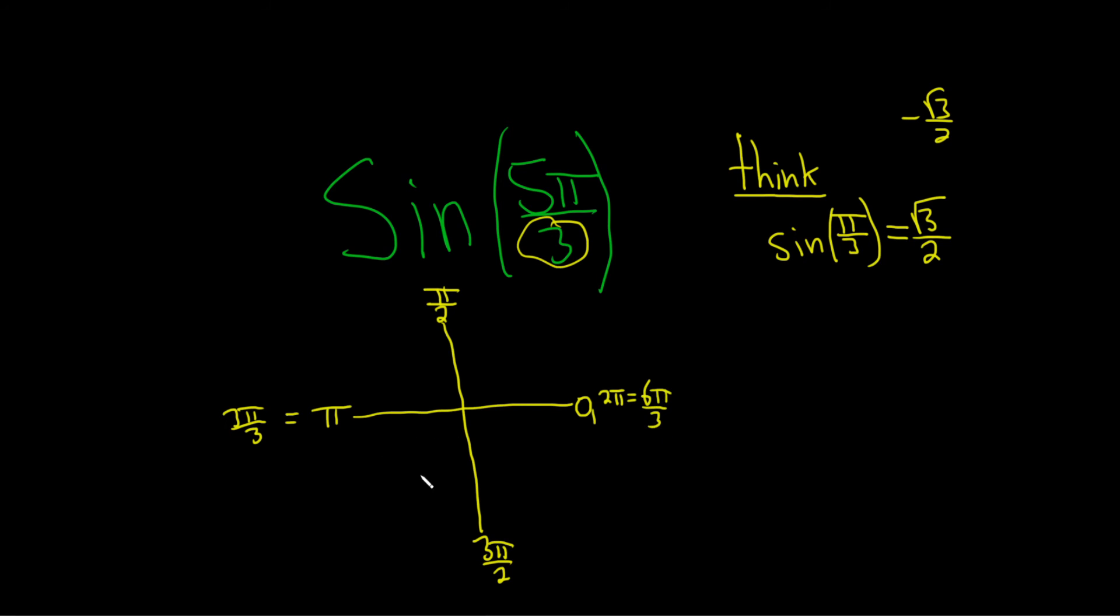So over here in quadrant 3, if you're at 3π/3 and you travel π/3 more, that puts you at 4π/3. If you're over here, π/3 less will put you here. This is 5π/3.